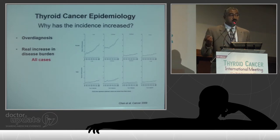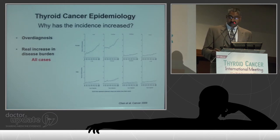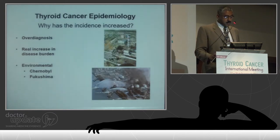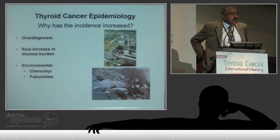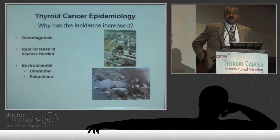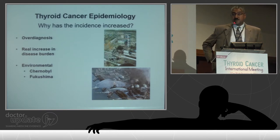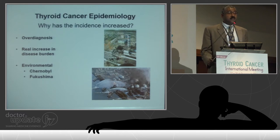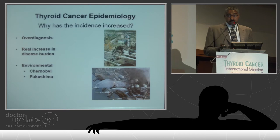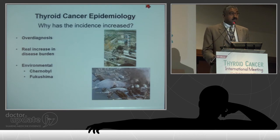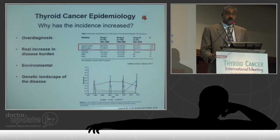When you look at tumors that are four centimeters, the increase is not as dramatic, but there has been a significant increase. We can account for some environmental factors globally — Chernobyl and more recently the Fukushima disaster, which has not, at least in screening, been associated with the increase in thyroid cancer incidence in children as was seen with Chernobyl. So we really don't know globally what the environmental factors are, and it's perhaps mostly over-diagnosis.